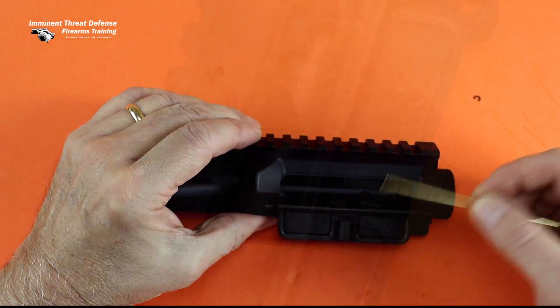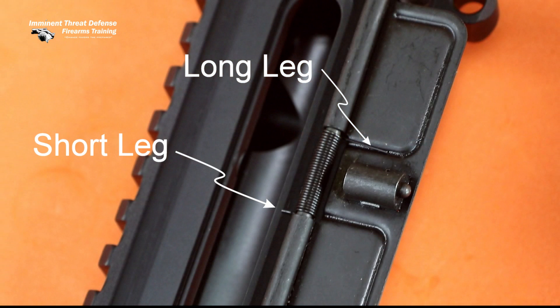So the spring holds the door open and the short leg should be against the body of the receiver and the long leg against the door.